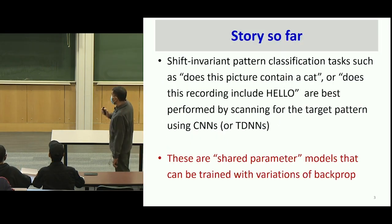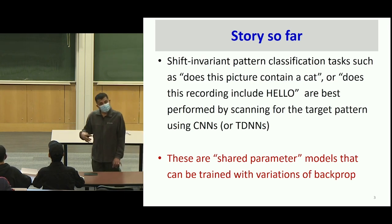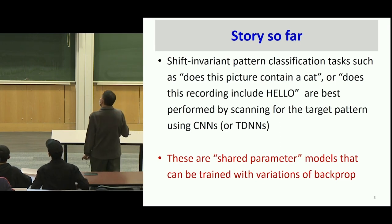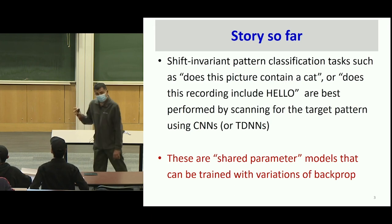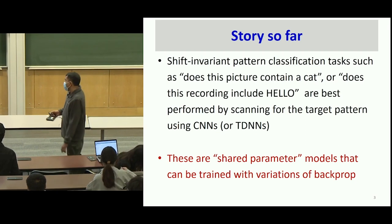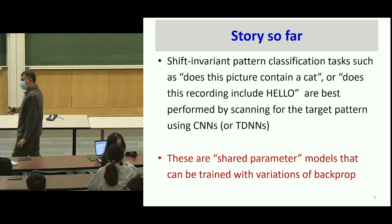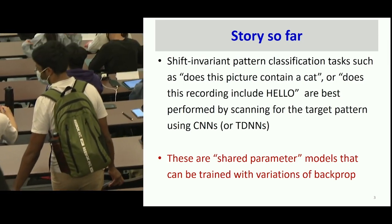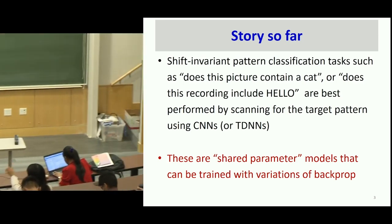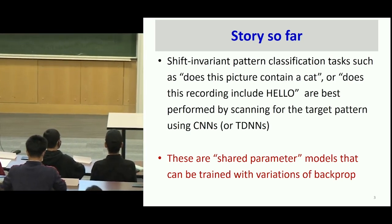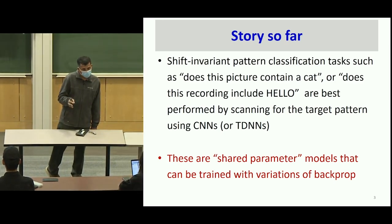Here's the story we've seen so far. Shift-invariant pattern classification tasks, like 'does this picture contain a flower,' can be performed by scanning for the target pattern in the input. This operation of scanning and voting over the scan can be reformulated by reorganizing the computations element by element, and we got a convolutional neural network.